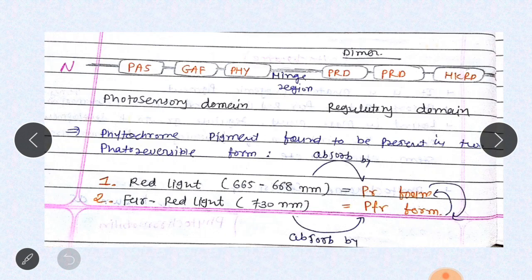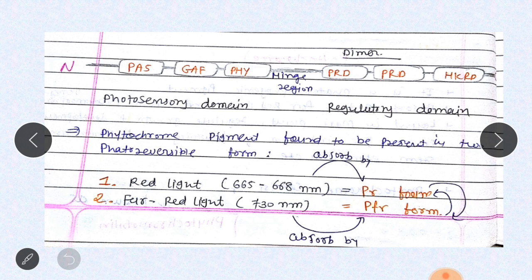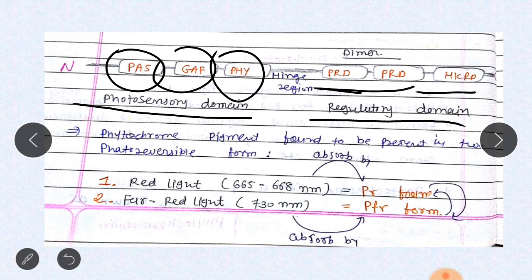The typical structure of phytochrome contains an N-terminal and a C-terminal. In the N-terminal, a photosensory domain is present, and in the C-terminal, a regulatory domain is present. In the N-terminal, a PAS domain, GAF domain, and PHY domain are present, and between the N-terminal and C-terminal a hinge region is also there. In the regulatory domain, a PRD dimer and HKRD — histidine kinase regulatory domain — are present.